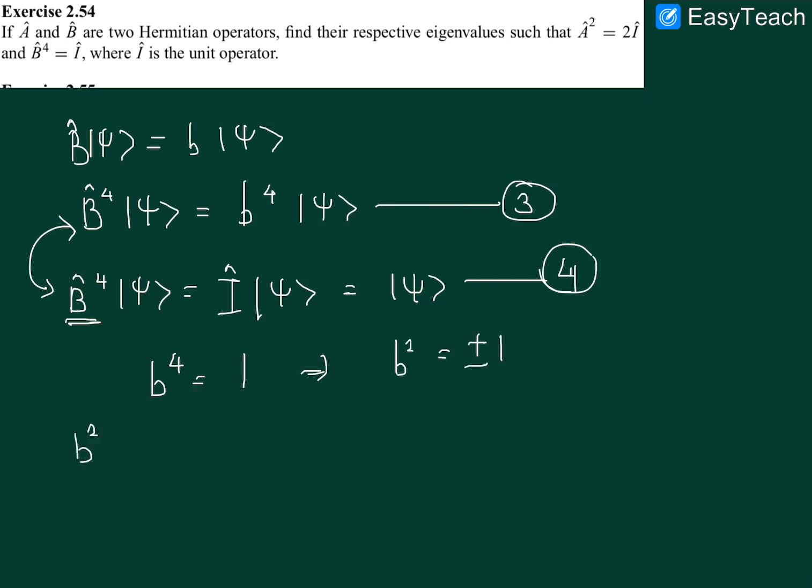When b square equals to 1, we get b equals to plus 1, minus 1. And when we have b square equals to minus 1, we get b equals to plus minus i.